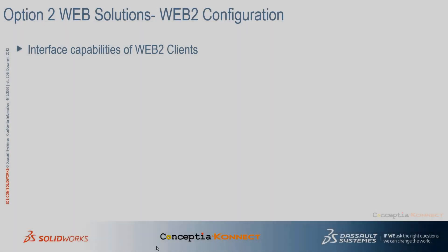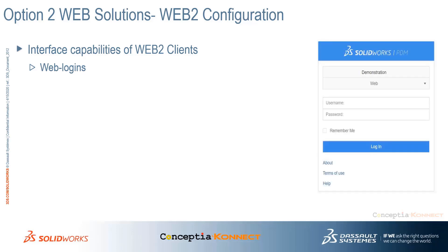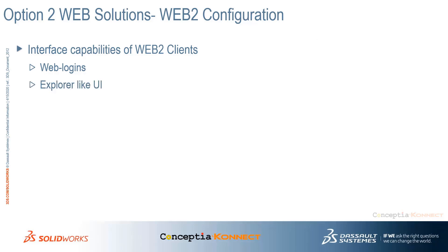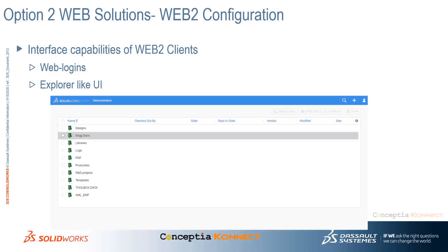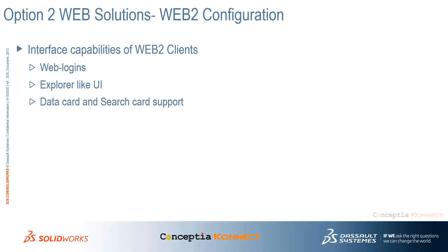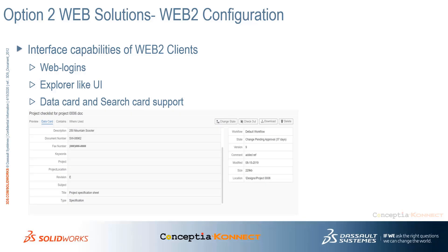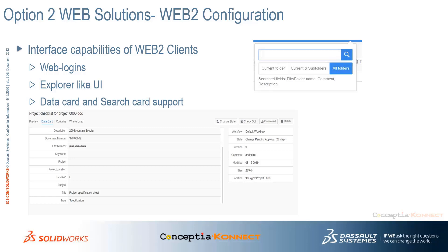PDM Web 2 configuration enables users to log into the PDM Professional vault using PDM credentials through a web browser. Once logged in, the interface of SolidWorks PDM Web 2 is similar to PDM Explorer, which you see when logging into the PDM client. Users get project folder listings according to permissions, can browse through folder structures, view individual folder data cards, access various tabs including the Contains tab, and search files just like in the PDM search window.